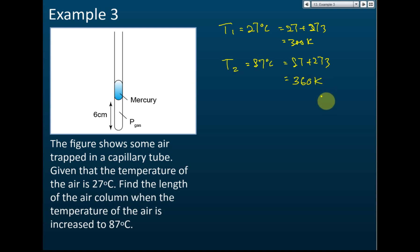They give us the length of the gas column. This is a cylinder-like capillary tube. Let's say the cross-sectional area is A. So the volume of the gas V1 is equal to 6 cm multiplied by A - that is how we find the volume of a cylinder, the cross-sectional area multiplied by the length. V2 - we don't know the length, so let's say the length is h and the area is A.